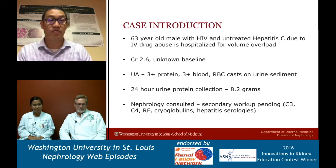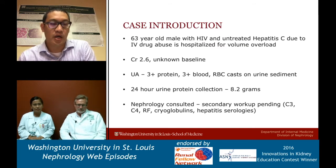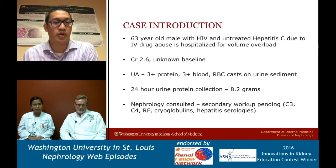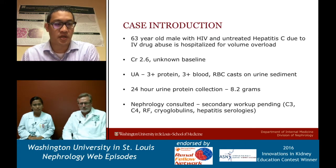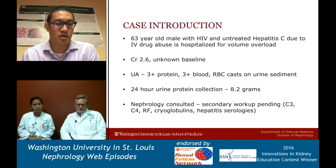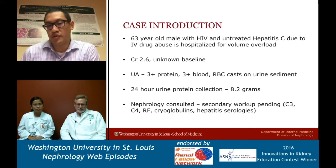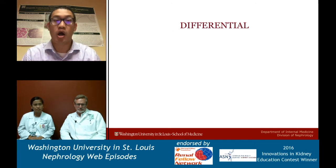Let me give you the case introduction. It's a 63-year-old male with HIV and untreated hepatitis C due to IV drug abuse. He's hospitalized for volume overload, creatinine is 2.6, baseline unknown. Urinalysis shows three-plus protein, three-plus blood, and RBC casts on urine sediment. A 24-hour urine collection shows 8.2 grams of proteinuria. At the time of biopsy, all secondary workup is pending. Cha, what are you thinking about? What are we looking for on kidney biopsy?